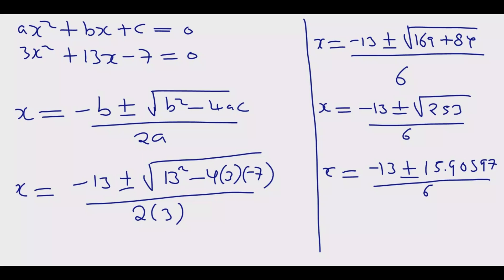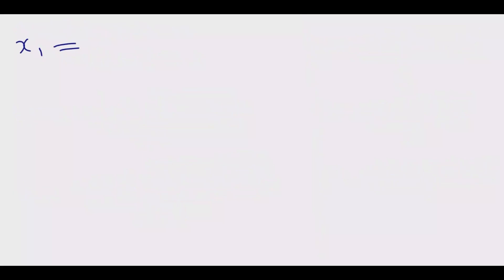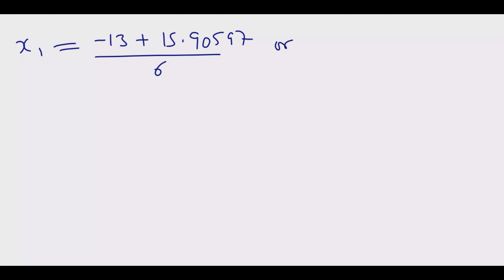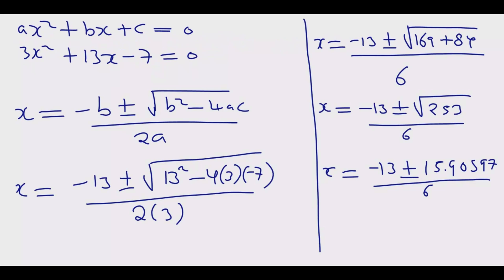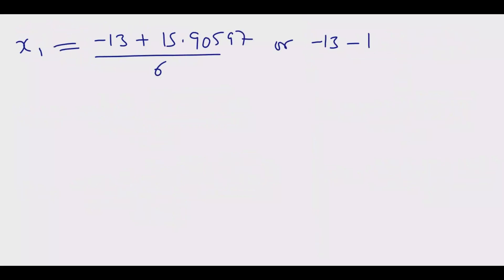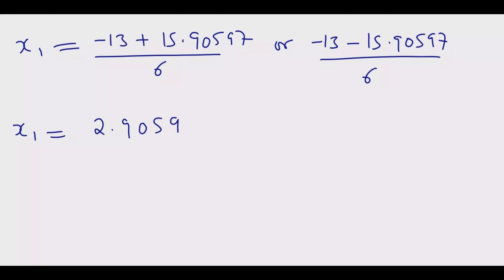So let me go to a bigger space. The first value, x1, equals negative 13 plus 15.90597, divided by 6. The difference between negative 13 and positive 15.90597 is 2.90597. Dividing by 6, I get x1 equal to 0.48 to two decimal places.